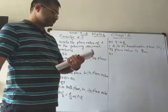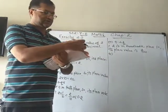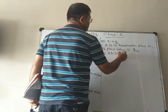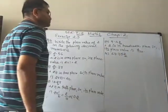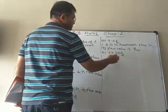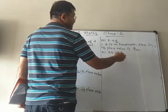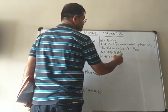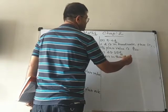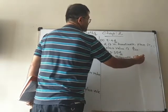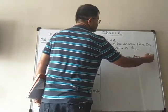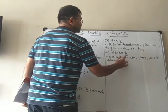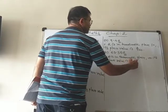The fifth number is 63.352. The first place is tenths, then hundredths, and the third is the thousandths place. So 2 is in the thousandths place, and its place value is 2/1000.